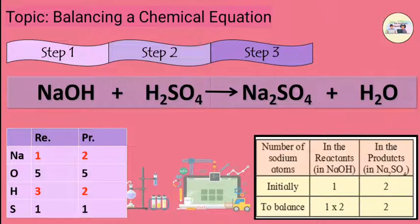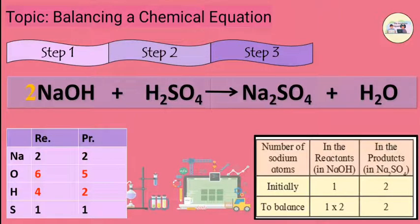Any one of them can be selected. Select the compound Na2SO4. Further, select sodium for balancing as the number of atoms of sodium in this compound is unequal on the two sides. A factor of 2 will have to be applied to NaOH, which the resulting equation is 2NaOH plus H2SO4 gives Na2SO4 plus H2O. Equation 2.